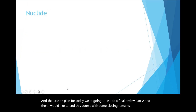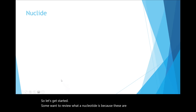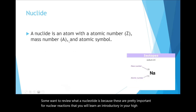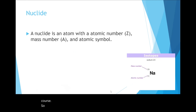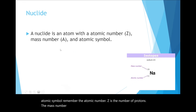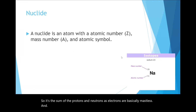Let's get started. I want to review what a nuclide is, because these are pretty important for nuclear reactions that you will learn in your high school course. A nuclide is an atom with a symbol, atomic number Z, mass number A, and the atomic symbol. The atomic number Z is the number of protons; the mass number A is basically how much it weighs, so it's the sum of the protons and neutrons, as electrons are basically massless.